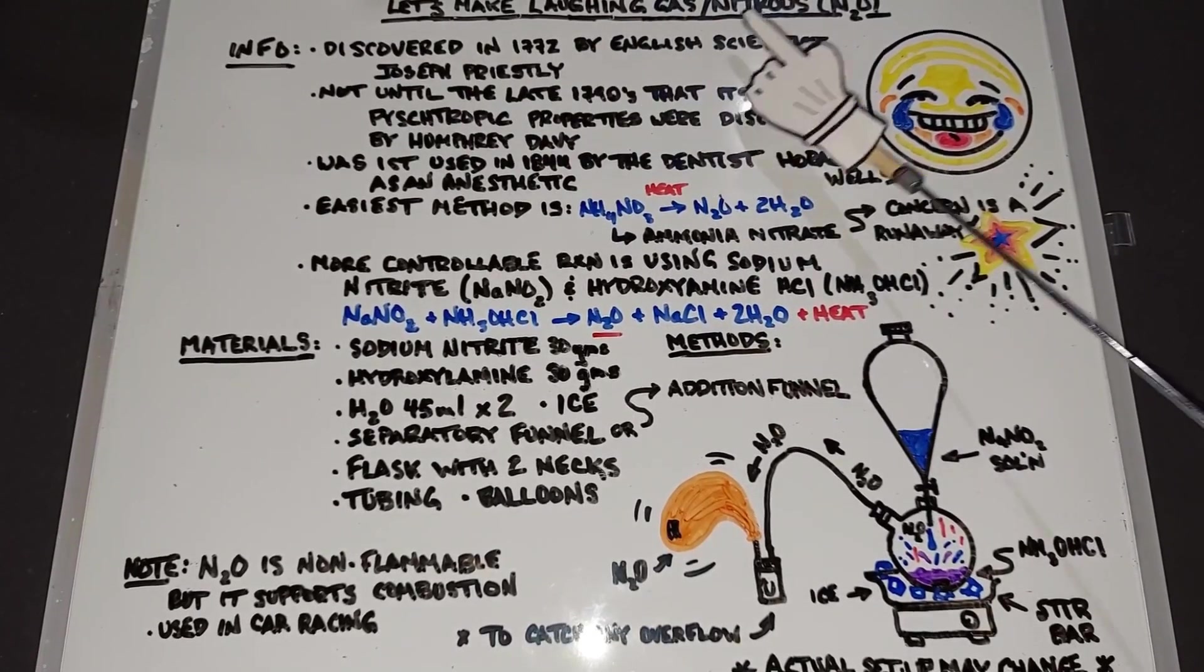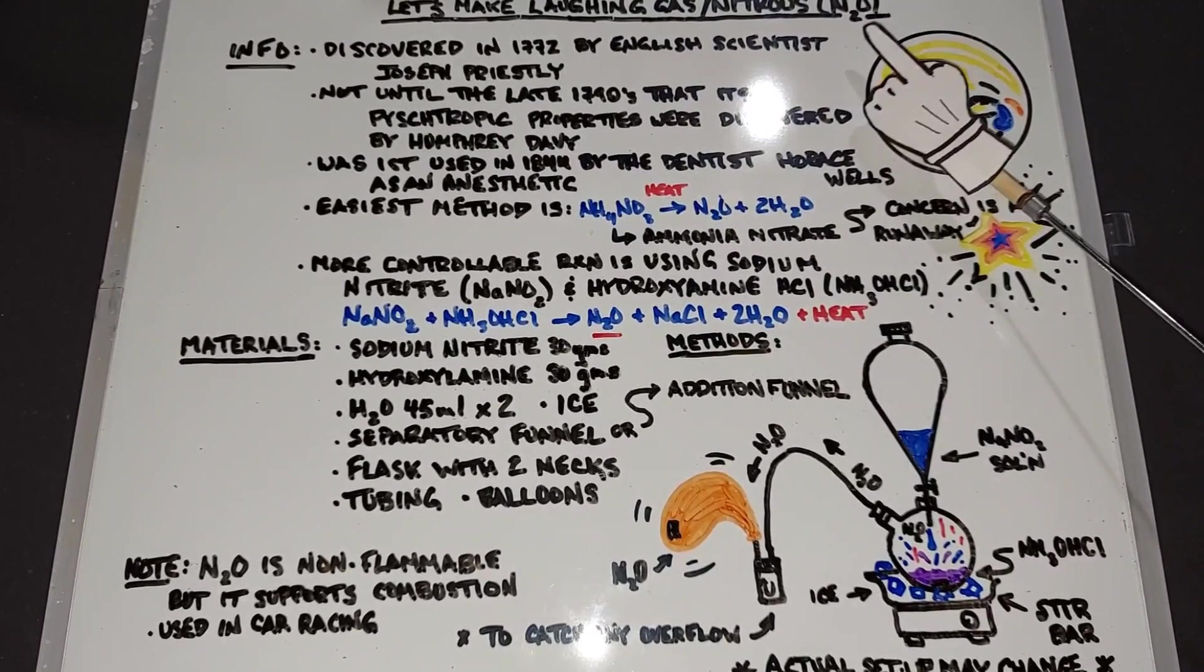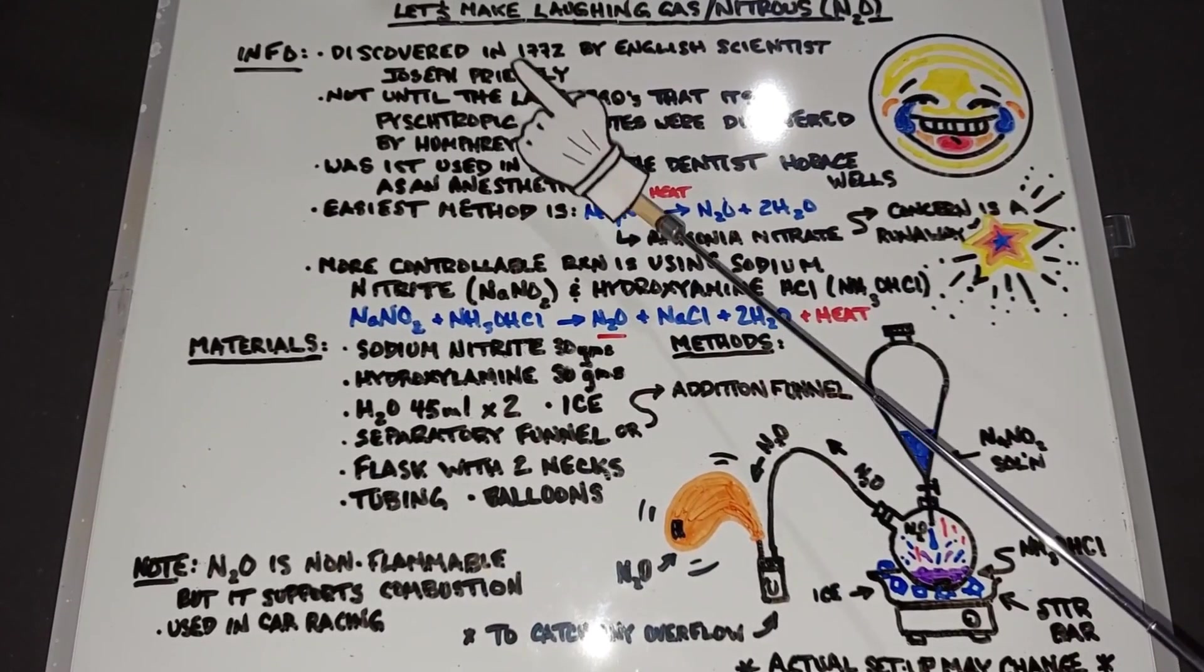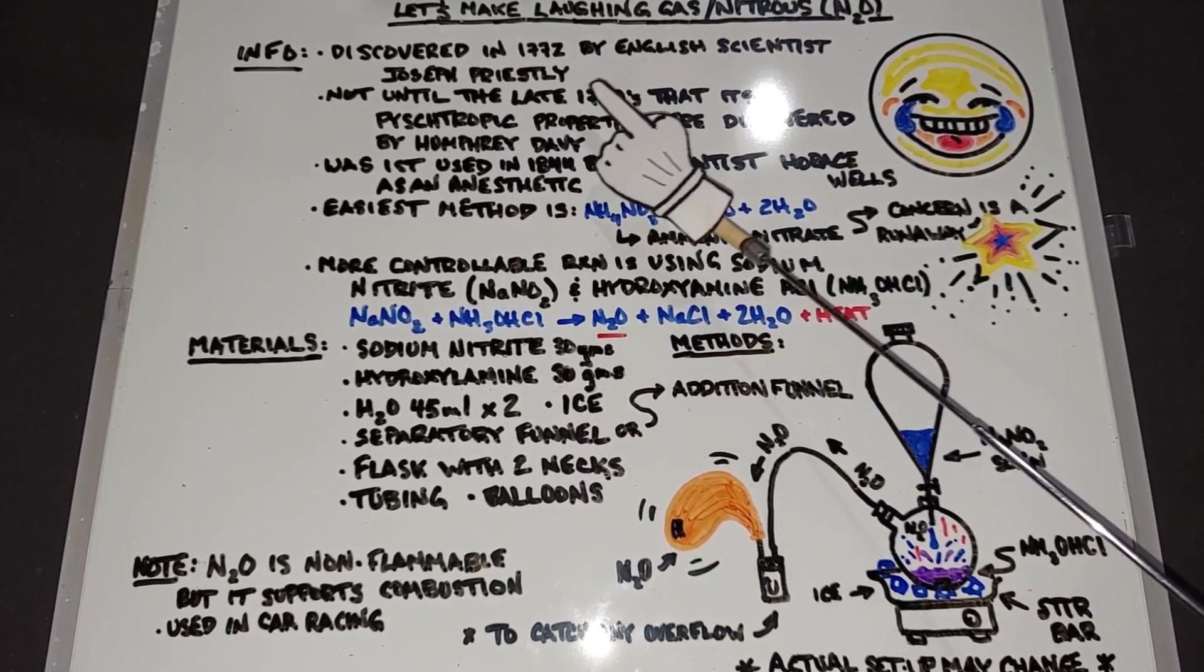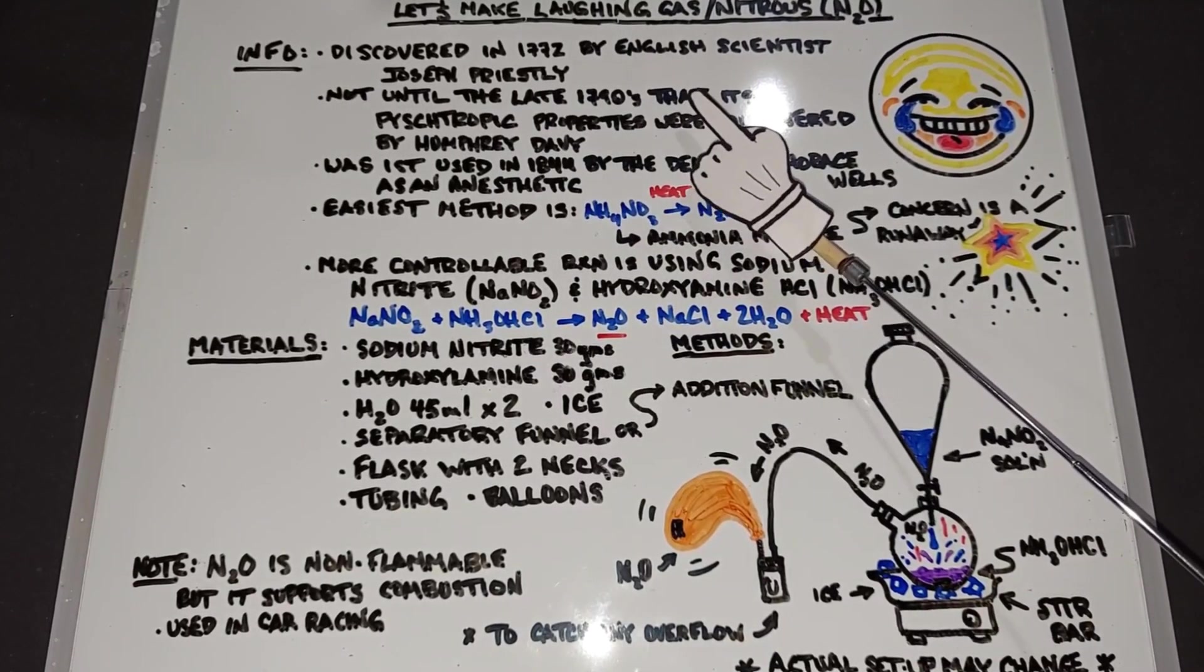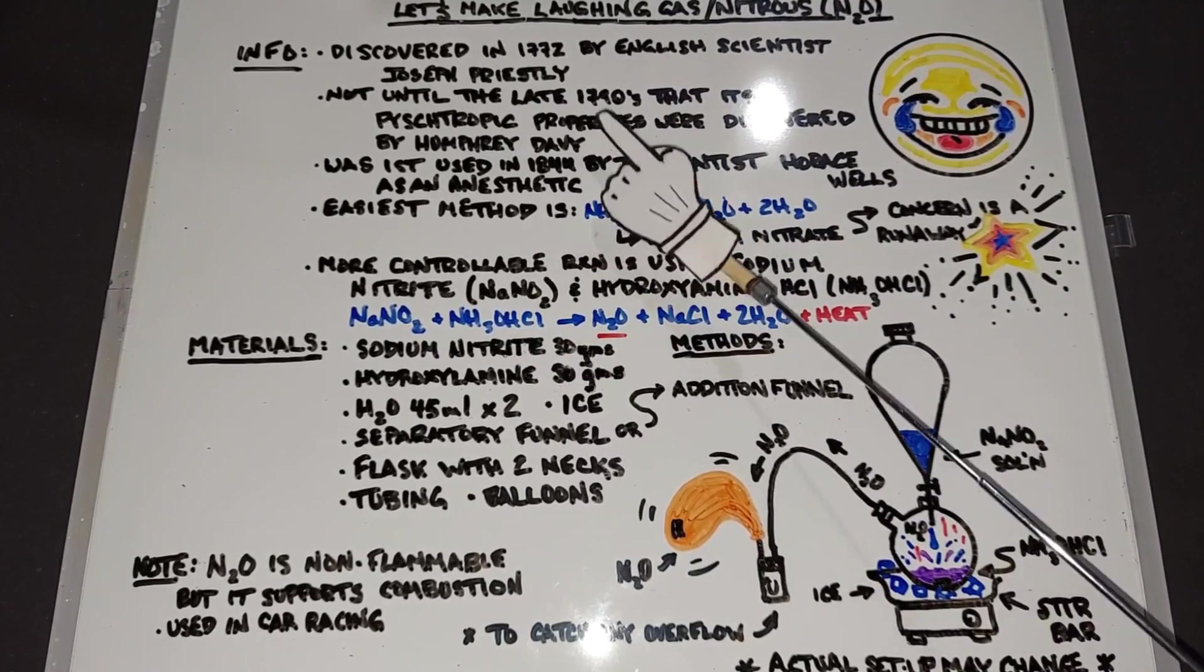In this video let's make some laughing gas N2O. Laughing gas was first discovered in 1772 by English scientist Joseph Priestley, but it was not until the late 1790s, over 20 years later, that its psychotropic properties were discovered.